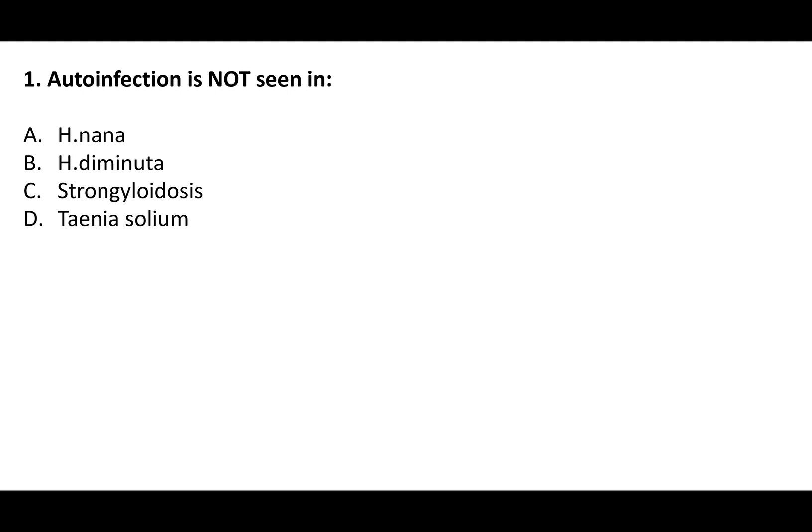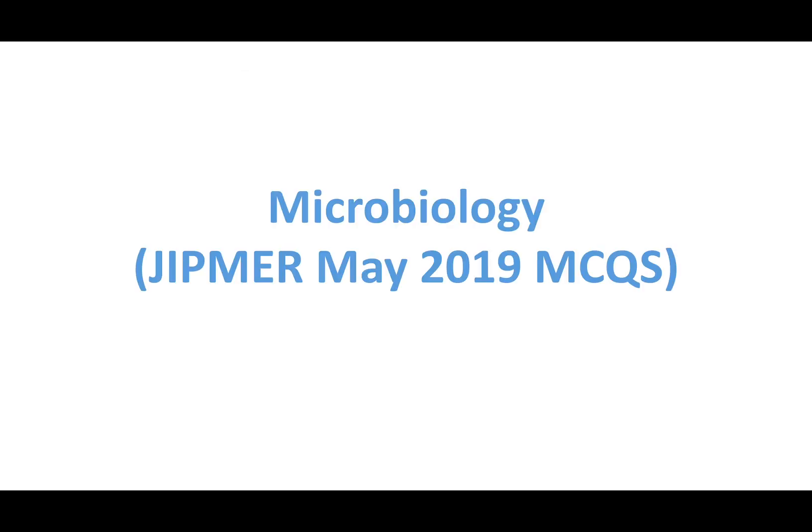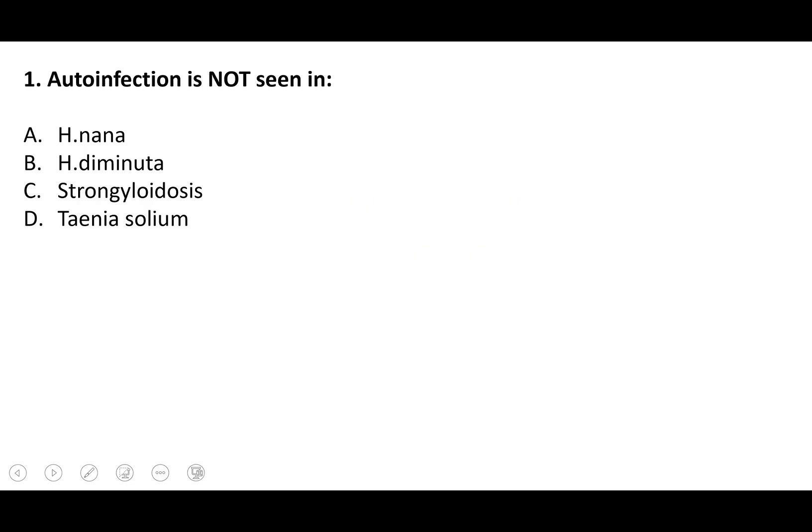Hi friends, I'm discussing microbiology questions from the JIPMER exam — the recent ones. The first question is: auto-infection is NOT seen in which of the following? The options are H. nana, H. diminuta, Strongyloides, and T. solium. You already know this. The mnemonic for auto-infection is CHEST.